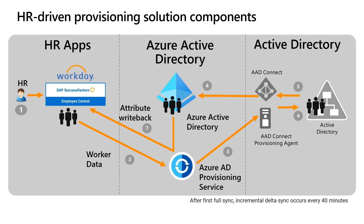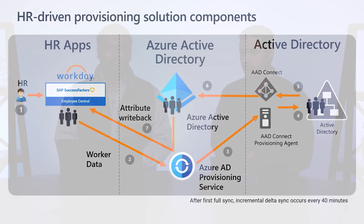The change in Active Directory is then synchronized to Azure AD using either AD Connect Sync or Cloud Sync. Optionally, if the IT team wants to write back certain IT-managed attributes to the HR app, they can configure the attribute write-back flow. Once the IT team configures these solution components, HR worker data will automatically sync to Azure AD and all connected apps.